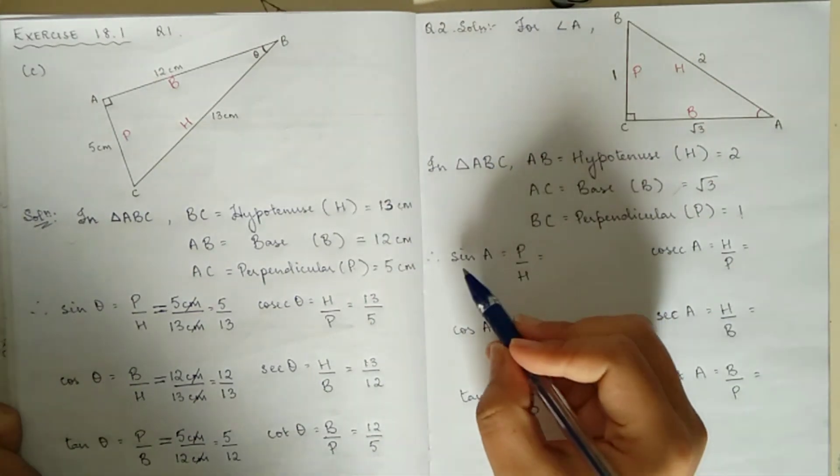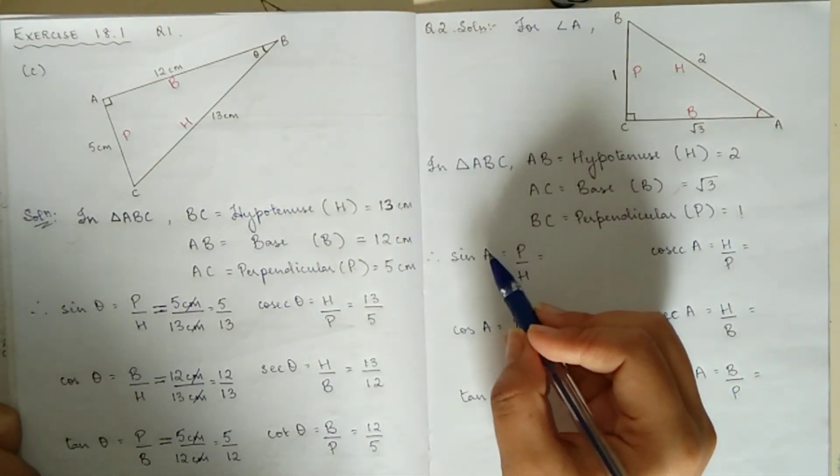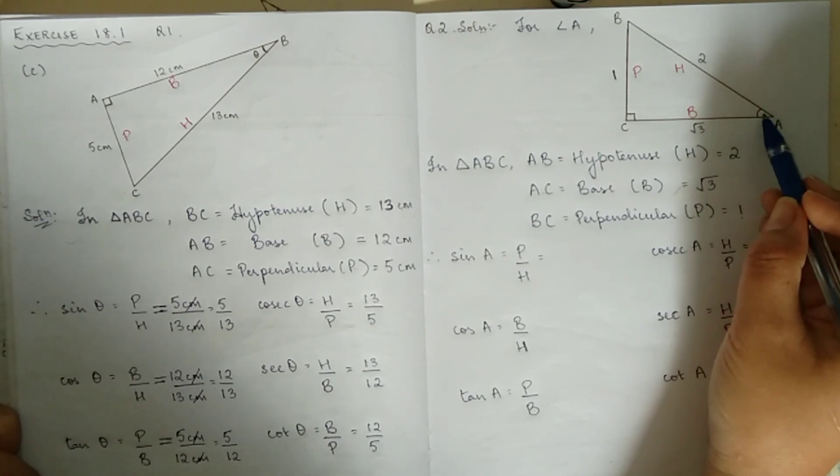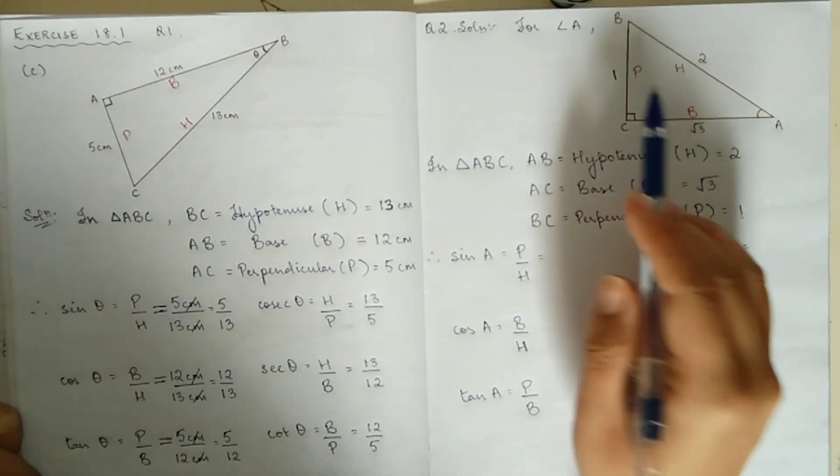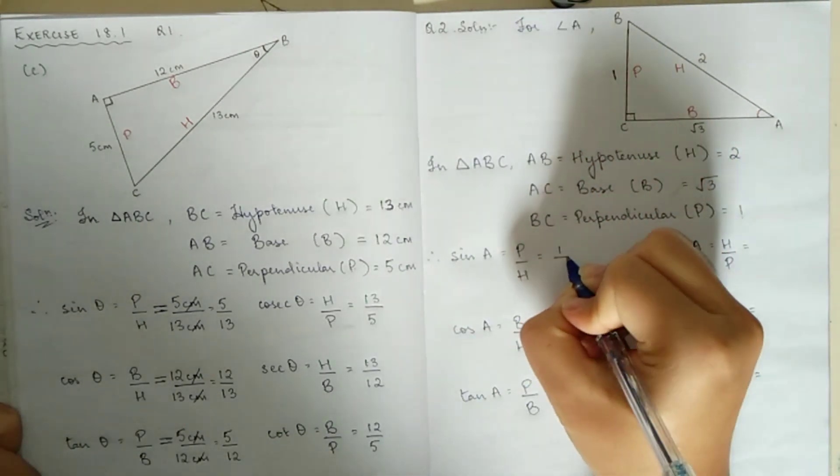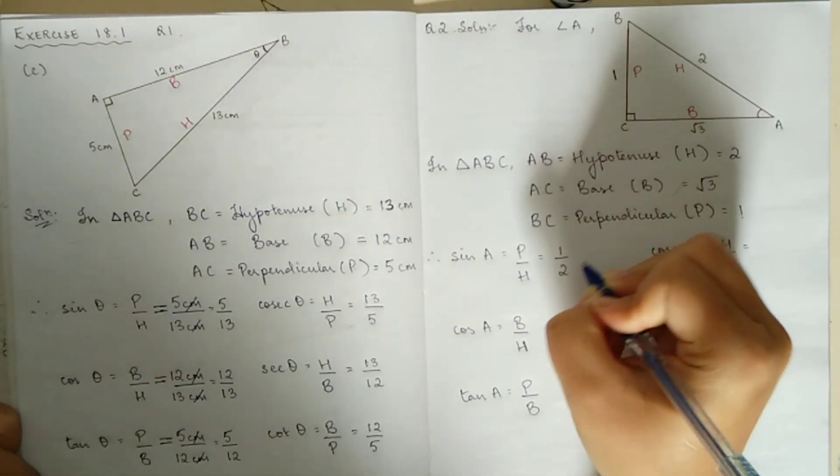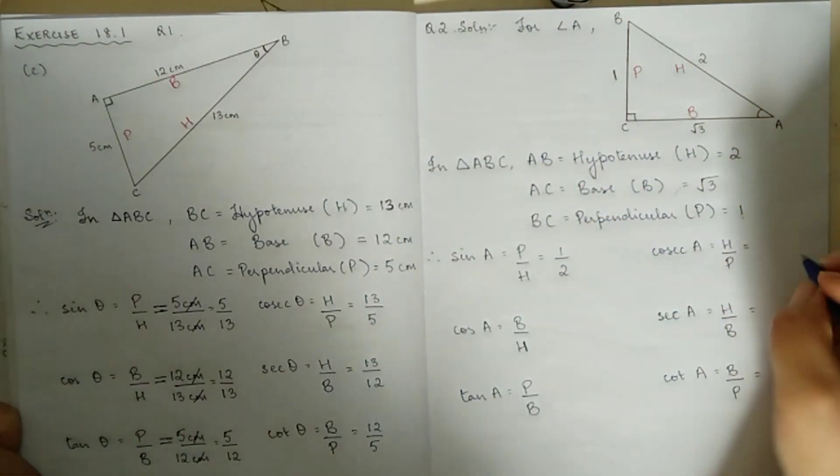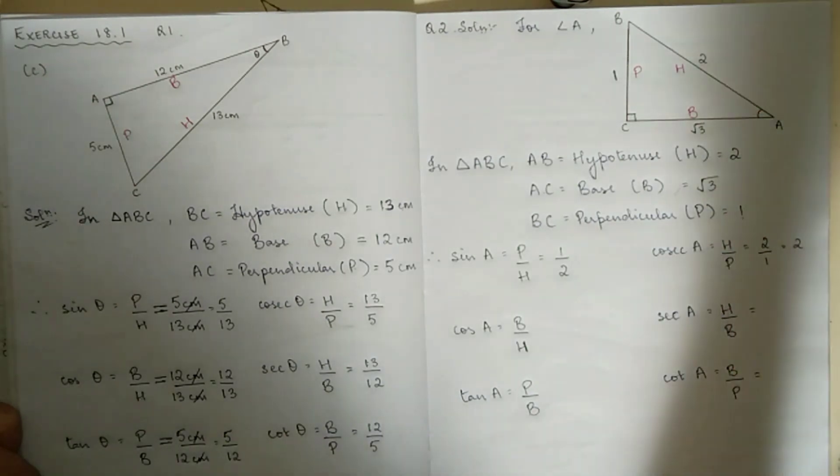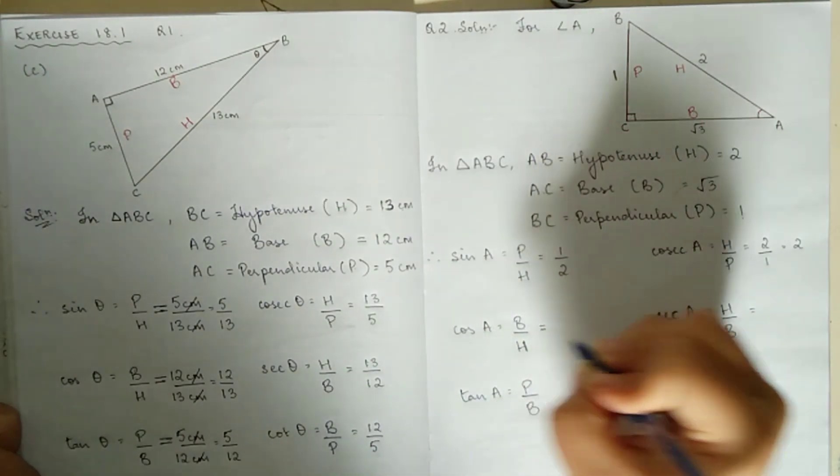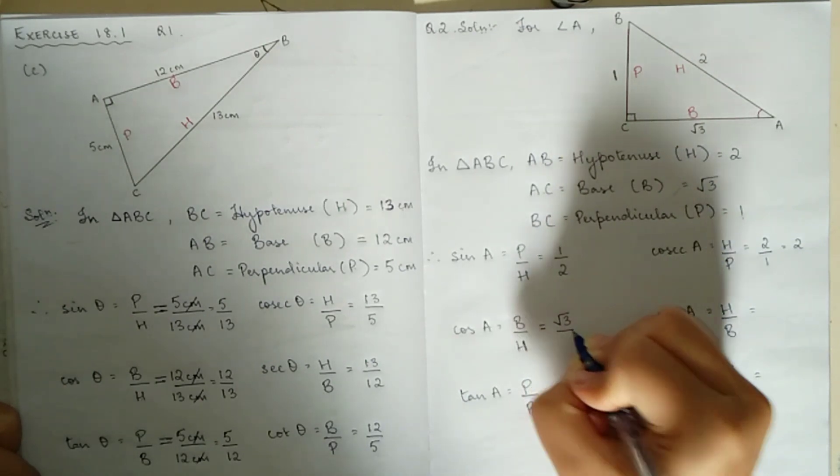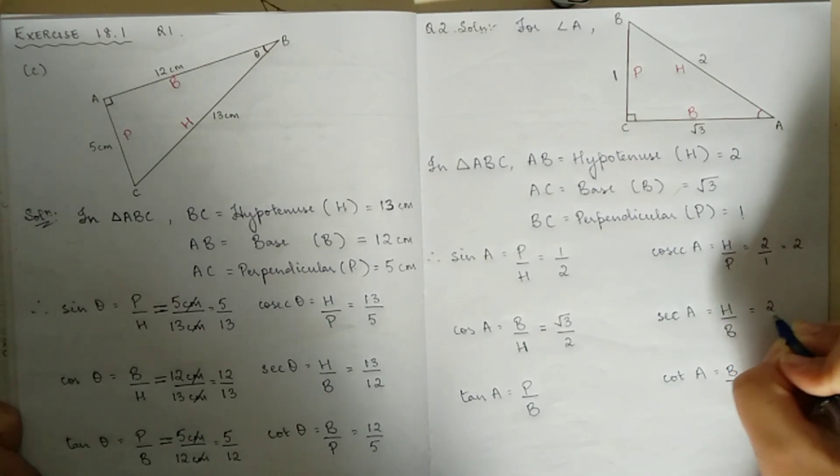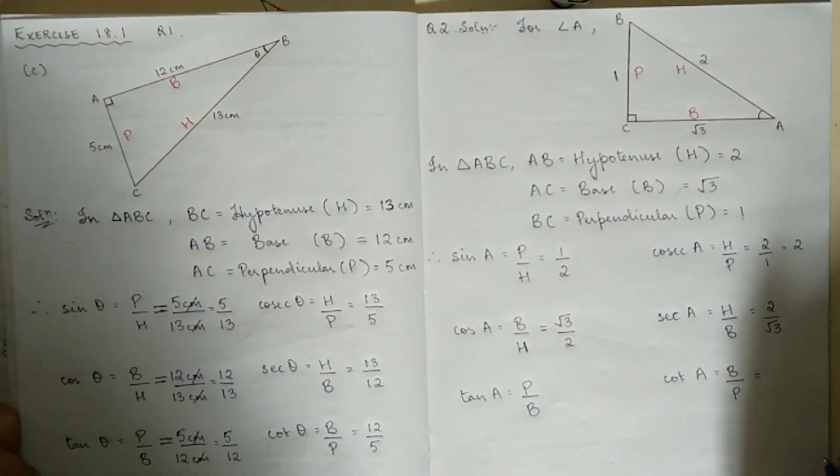Now, sin A is P by H, which is 1 by 2. Since P by H is 1 by 2, H by P will be 2 by 1, which equals 2 for cosec A. Next, cos A is B by H, which is root 3 by 2. So H by B gives us 2 by root 3 for sec A.